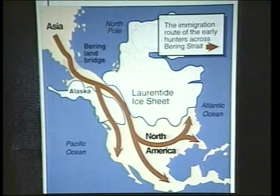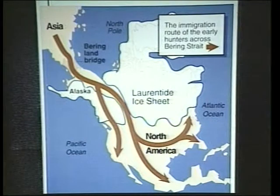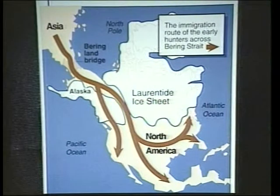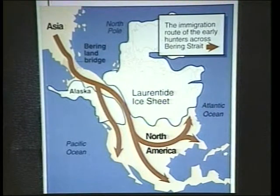I want to start way back, around 15,000 years ago to when humans first came into North America. This is somewhat debatable - there are those who put human migration into the Americas at about 40,000 or even 70,000 years ago. But orthodox archaeologists place humans coming across Beringia, or the Bering Land Bridge from Asia, somewhere around 15,000 years ago.